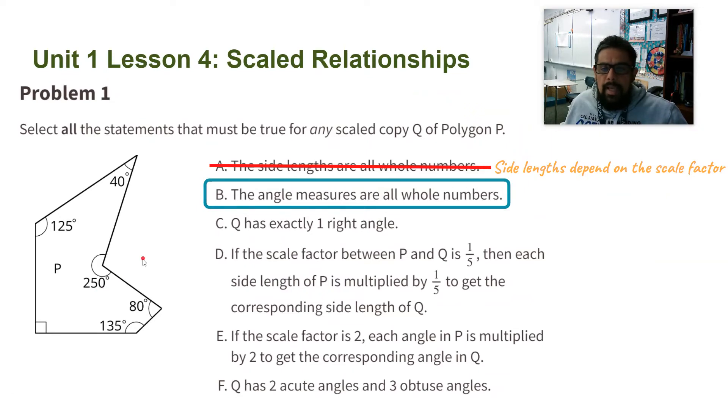Part C: Q has exactly one right angle. If we look at P, the original, it has exactly one right angle, so that one is true. The copy will also have exactly one right angle.